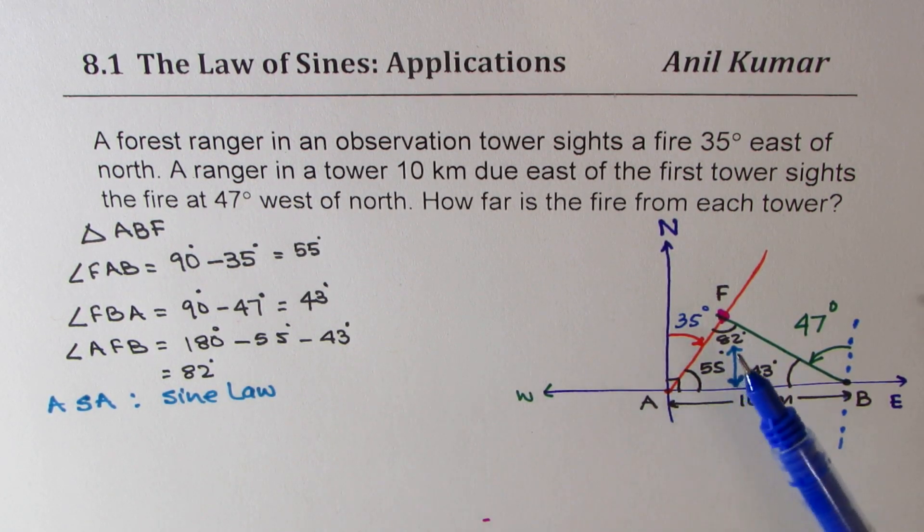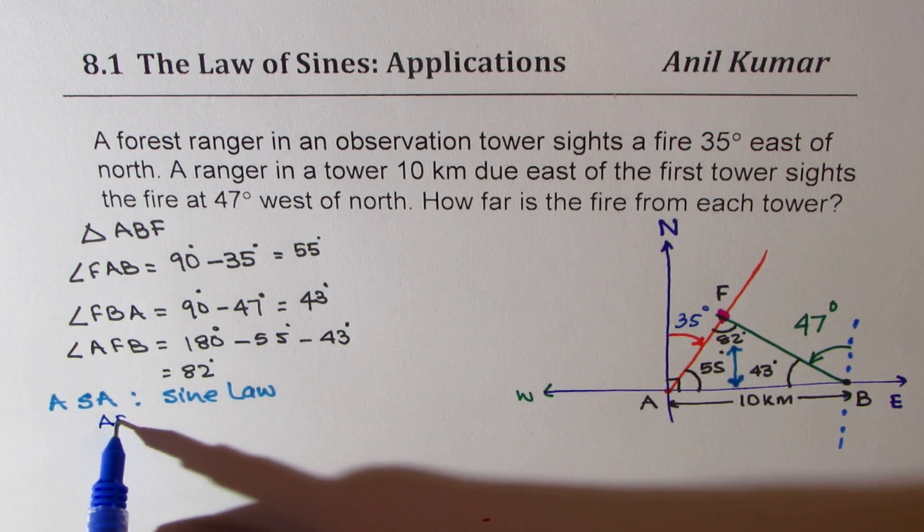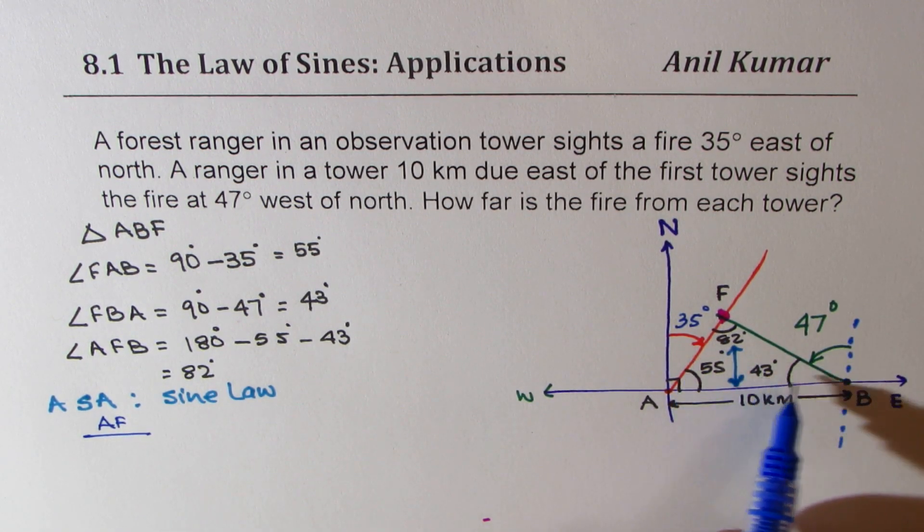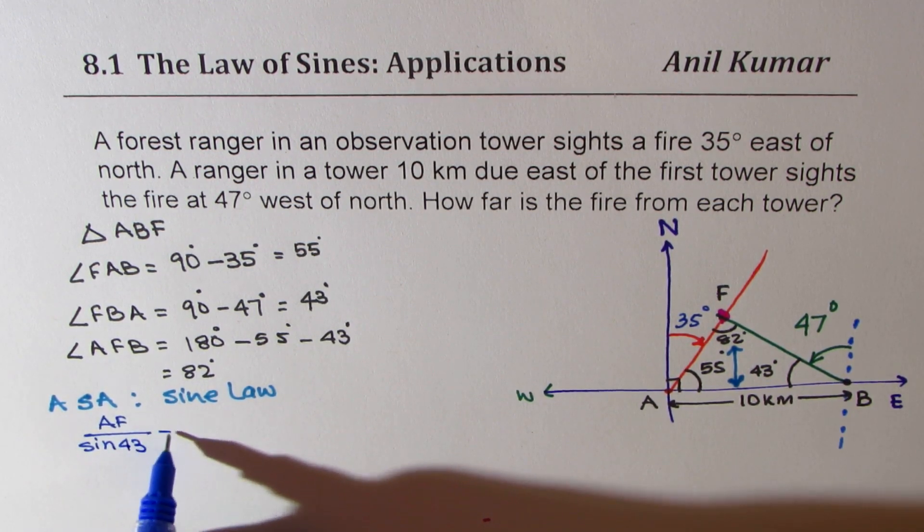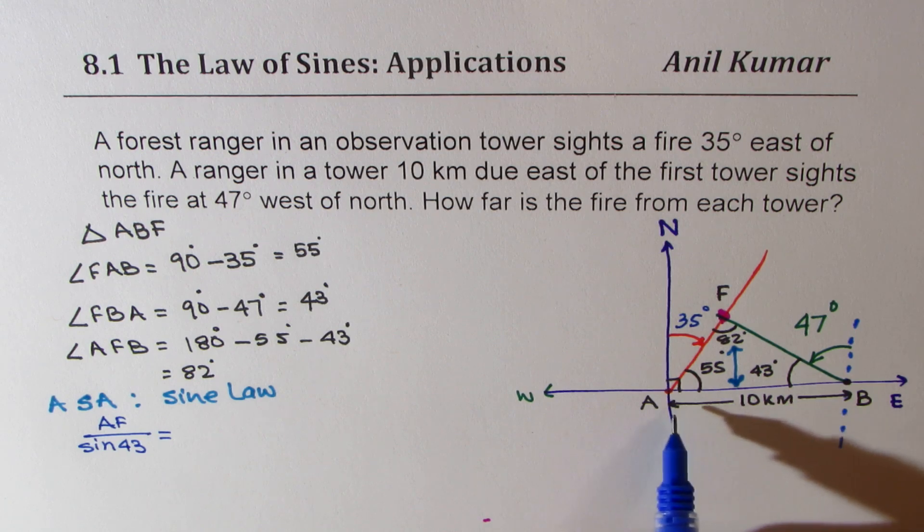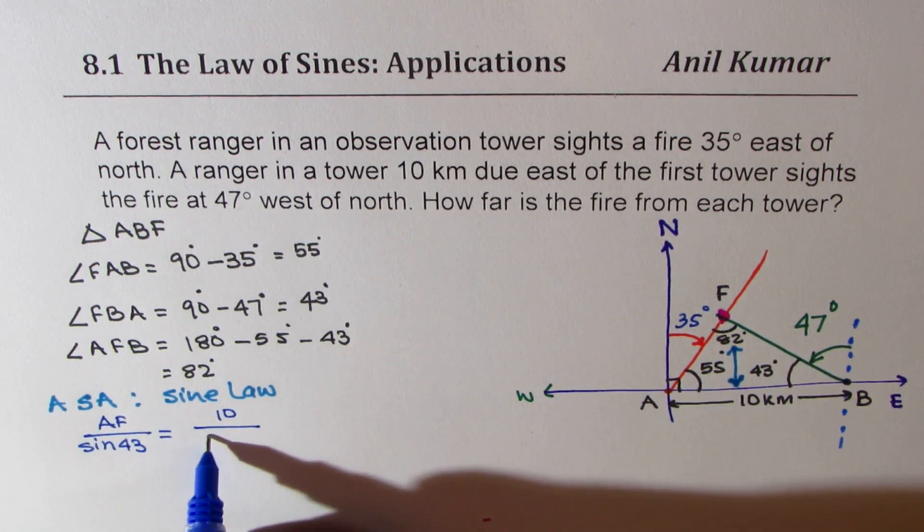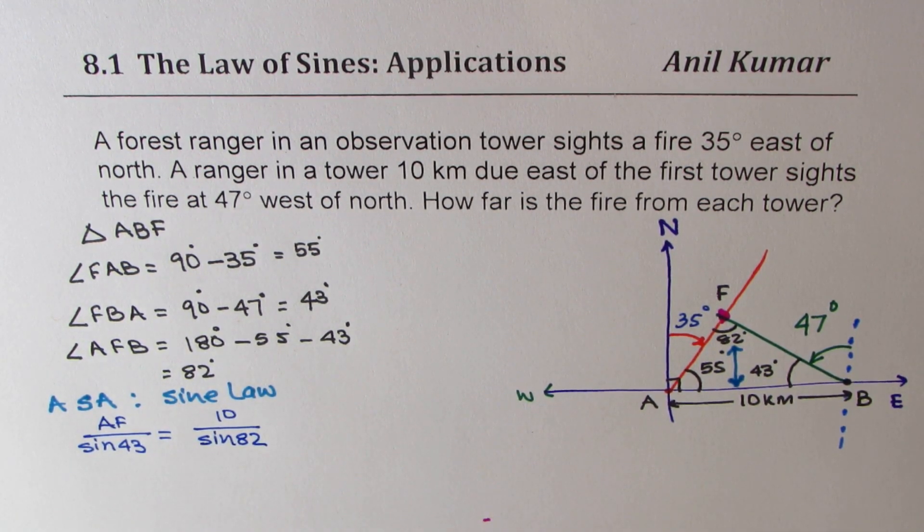What do you need to find? You need to find AF and FB. So you can write AF over the angle opposite to AF, which is sine of 43, equals what is known to you. The side 10 kilometers which is AB. So I'll write 10 here divided by sine of 82.